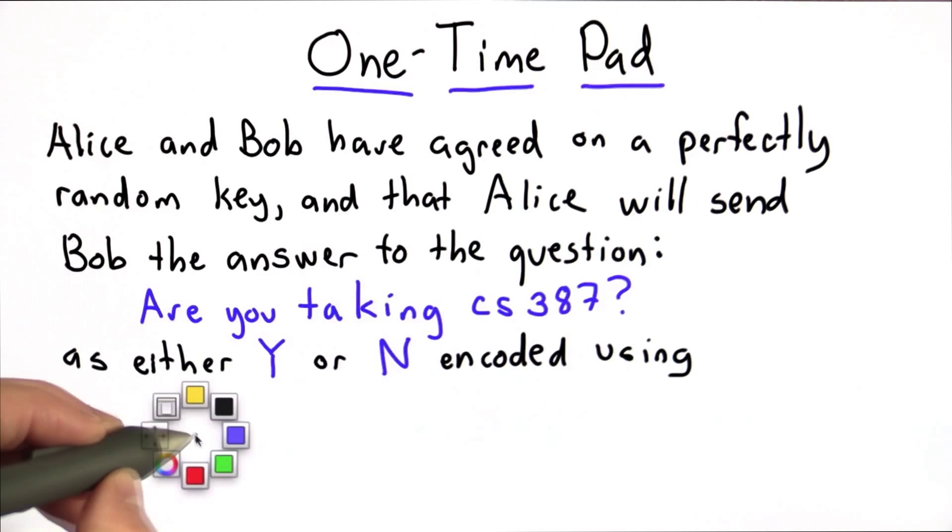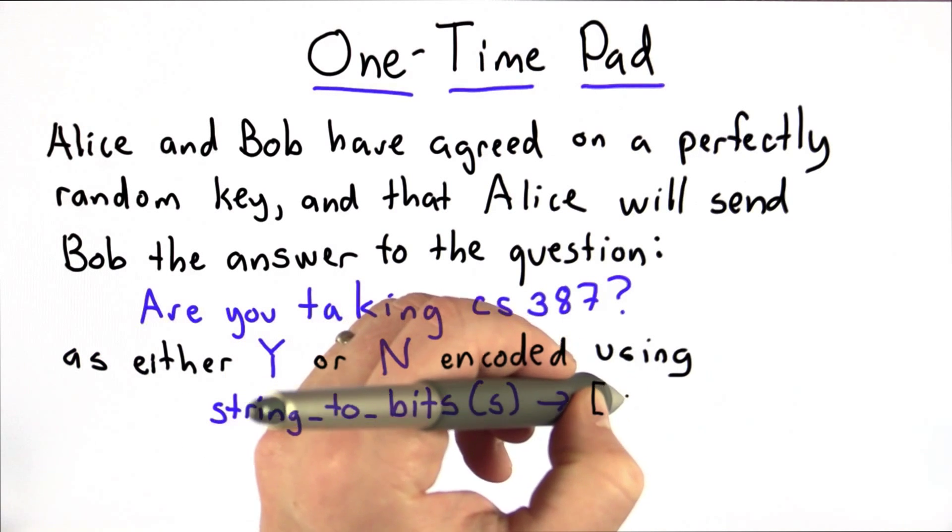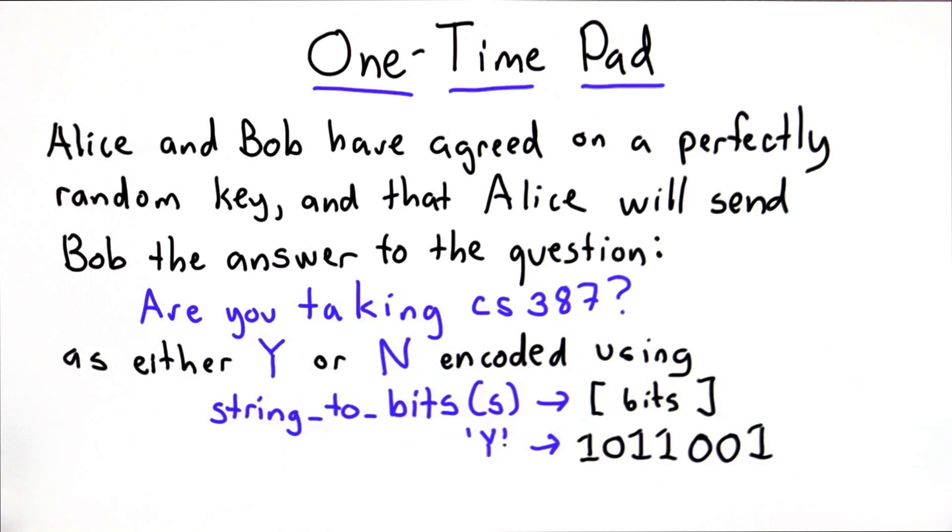This will be encoded using the string-to-bits procedure, which takes in a string and gives you a list of bits. And the result of string-to-bits for Y is 1011001, and the result for N is 1001110.